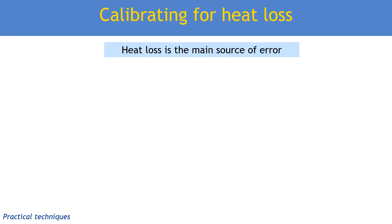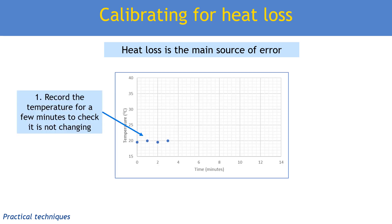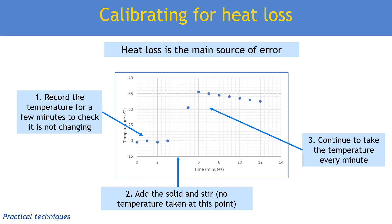Although the polystyrene cup reduces heat loss, it's still the main source of error in these experiments. You should be aware of another common practical method to make our determination of delta T more accurate. Instead of just recording the initial temperature once at the start, we record the temperature of the solution in the cup every minute or so for a few minutes. This ensures the temperature is not increasing or decreasing because we may have just brought the solution from a warmer or colder environment. We then add the solid or solution that will react, and stir to mix. At this point we probably won't have time for a temperature reading, but we will then continue to record the temperature.